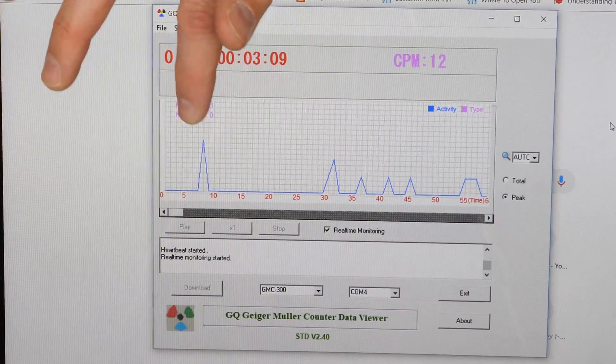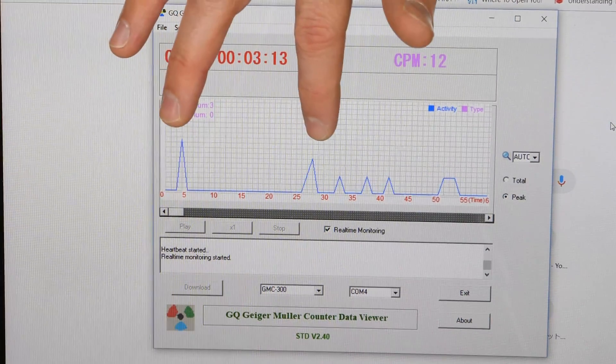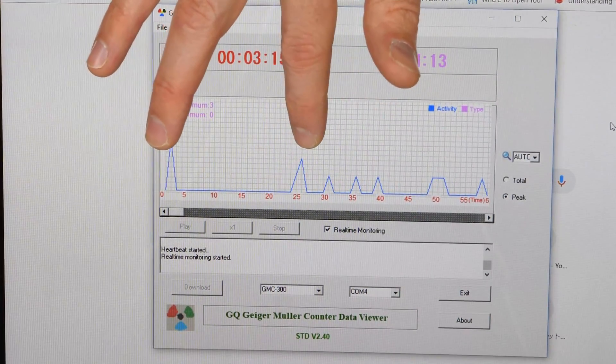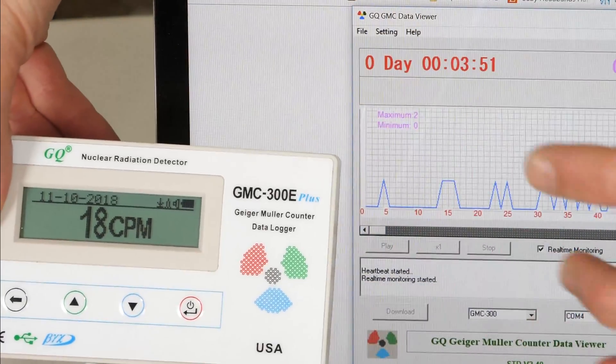It takes a data point every second. And so sometimes, every once in a while, there's going to be three that decay in a second. Sometimes there's going to be zero, and sometimes there's going to be two, and sometimes there's going to be one. So what is actually decaying here?